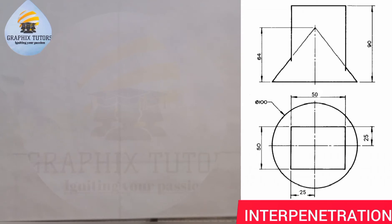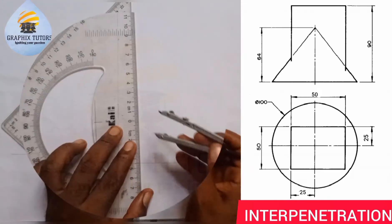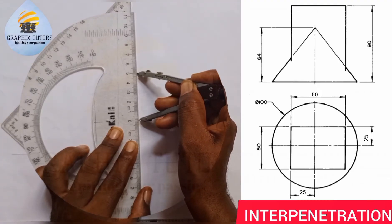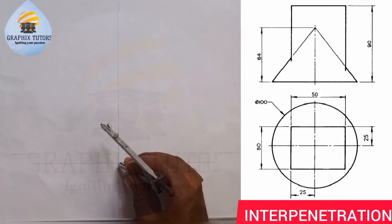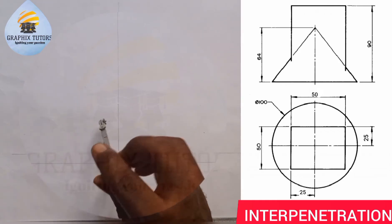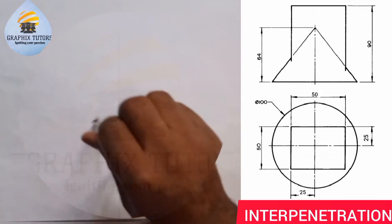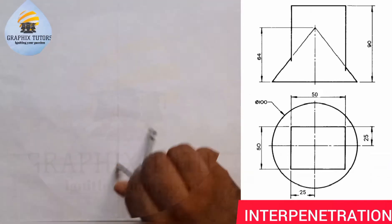Now if you look closely, we are given that the diameter of the circle in the plan is 100, so we have to measure 50 on our scale. When I place my instrument here and measure half of 100, which is 50, I come straight down to the center point where they intercept, and I draw my circle.